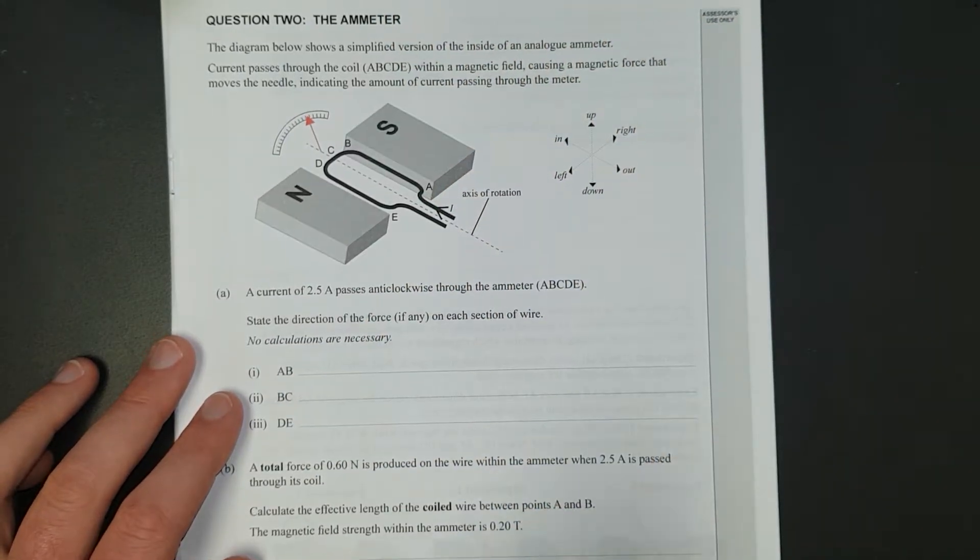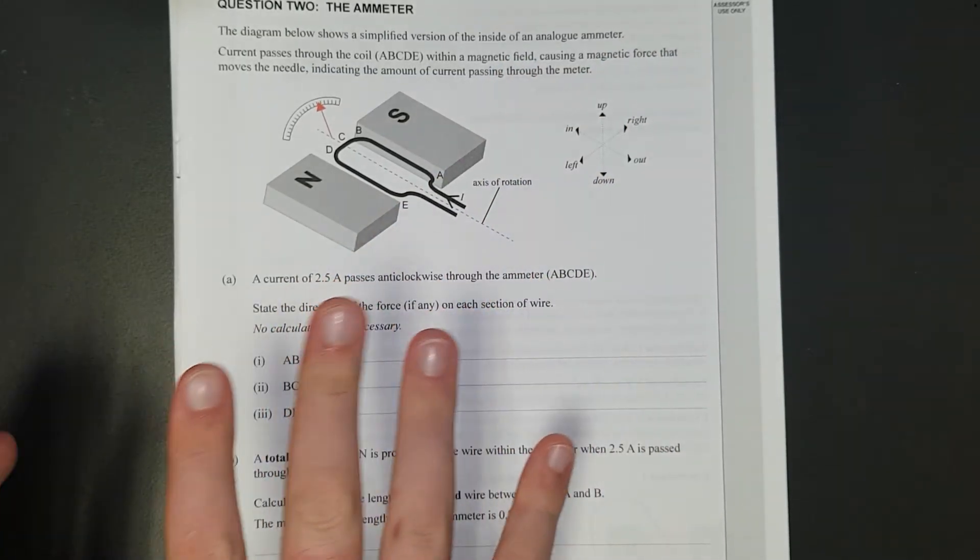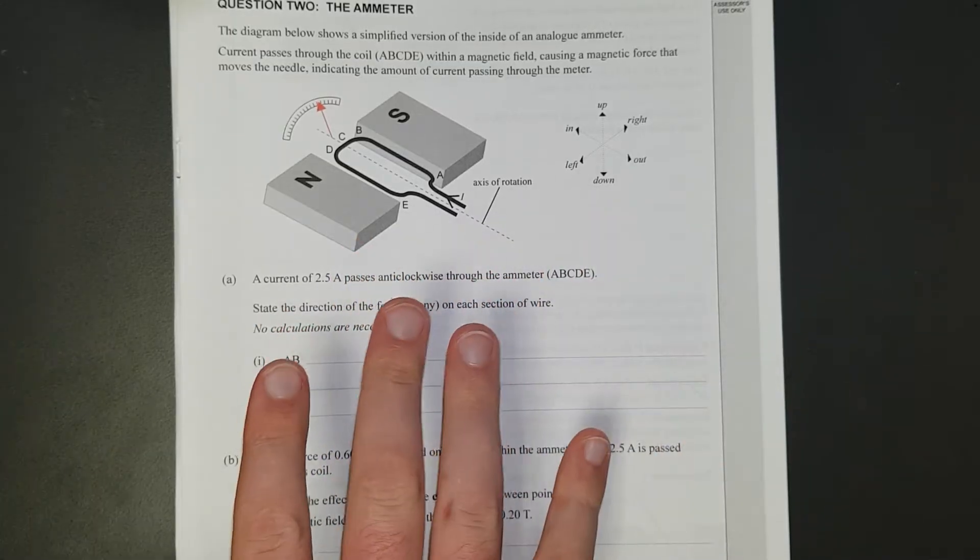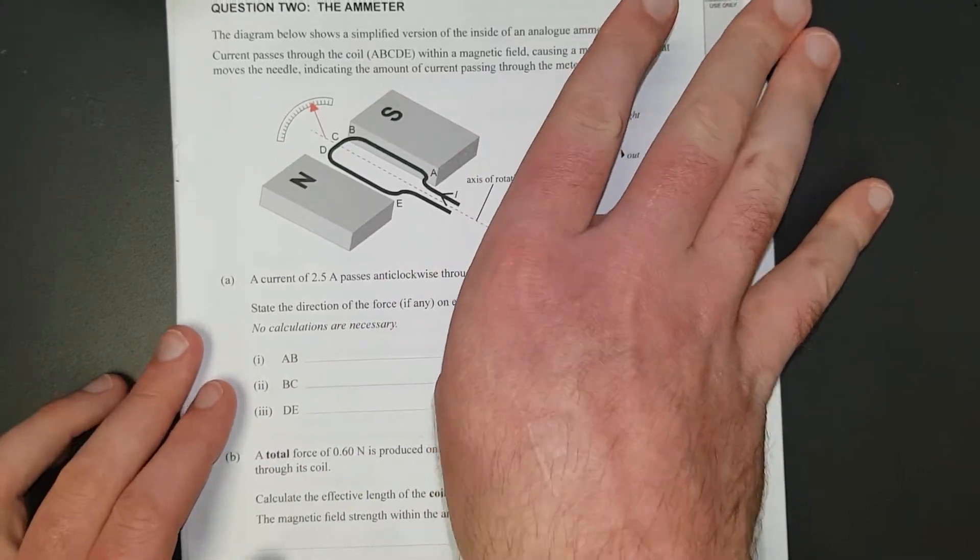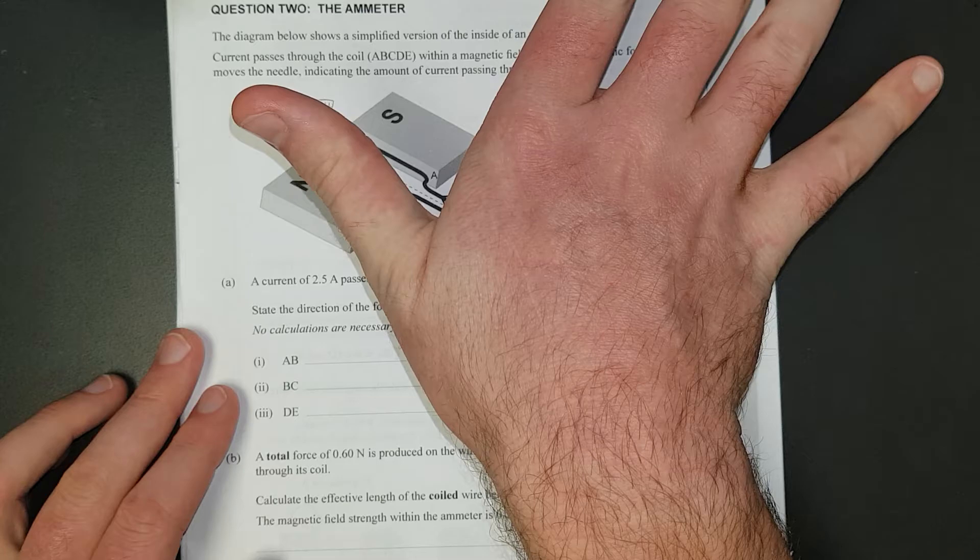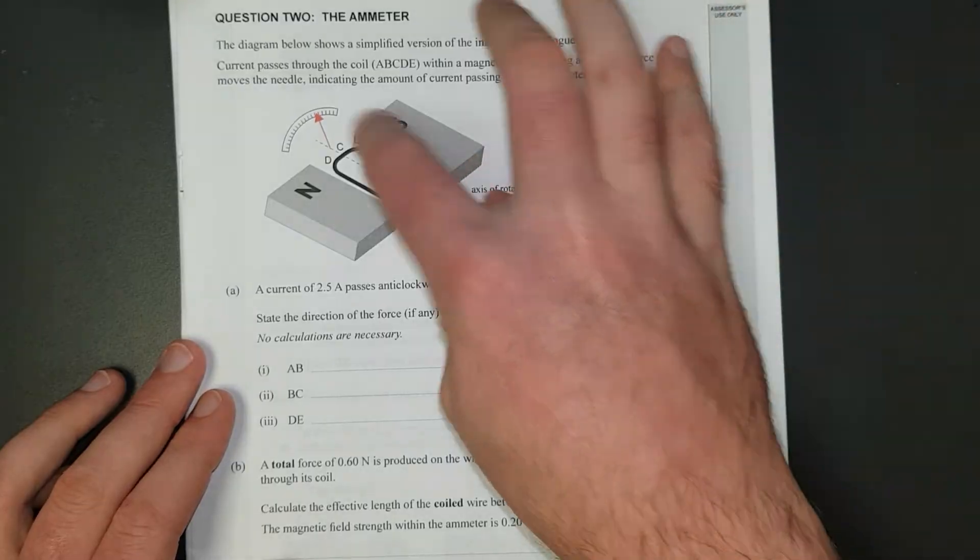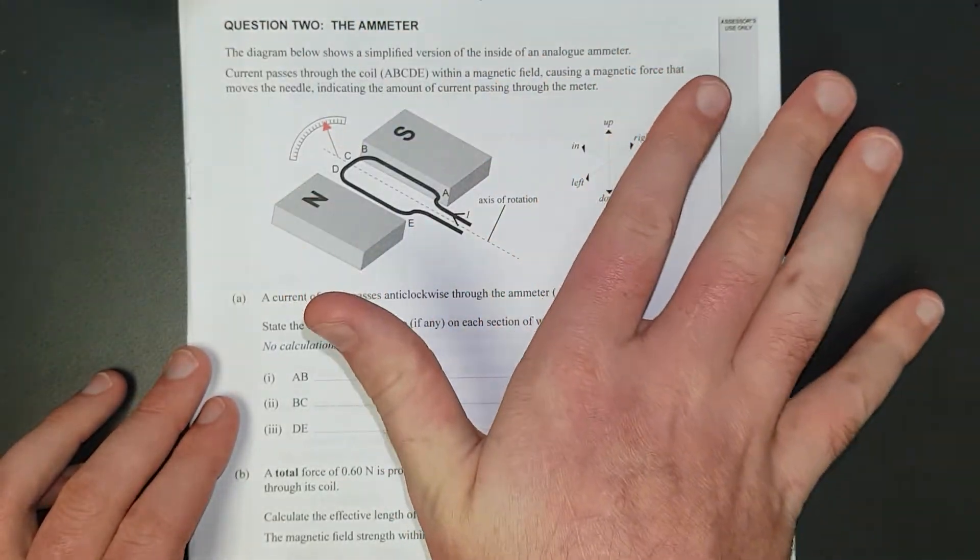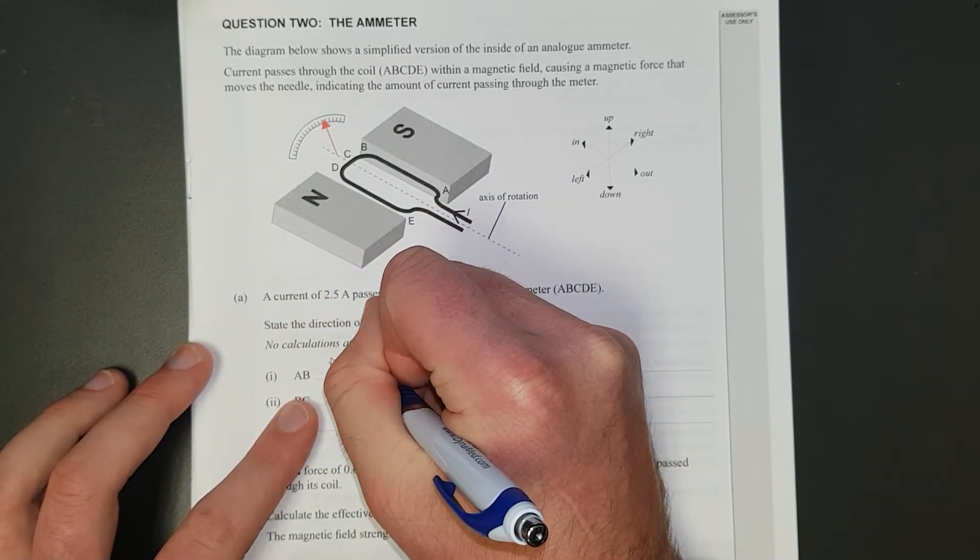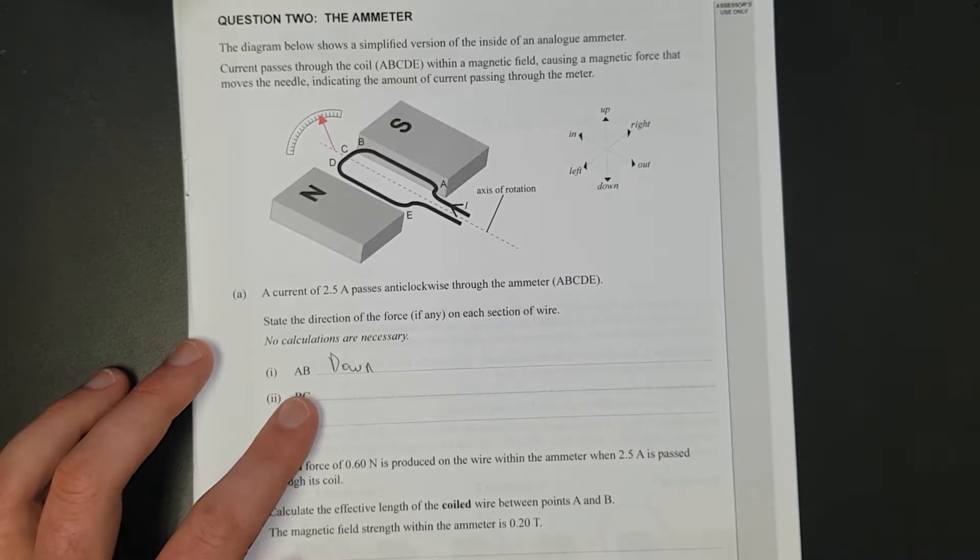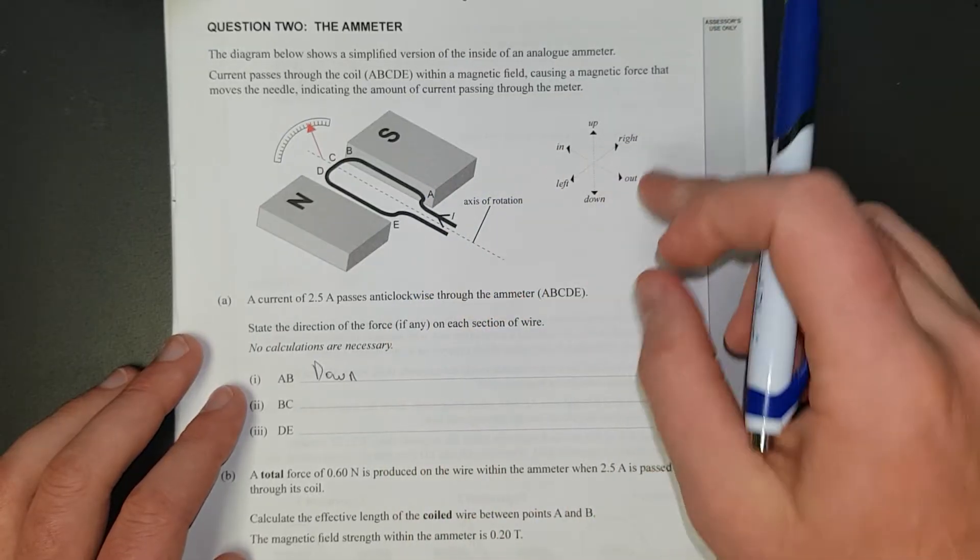Your fingers go in the direction of the magnetic field, so magnetic fields go from north to south, just like, well, not just like, but electric fields go from positive to negative, magnetic fields go from north to south, arbitrarily. Your thumb is the direction of the current, and the force comes out of your hand, and that's why it's like a slap. So for AB, as you can see, my hand's sort of pointing down, so it is down. Or you could say into the page, but down's probably the best descriptor of it.